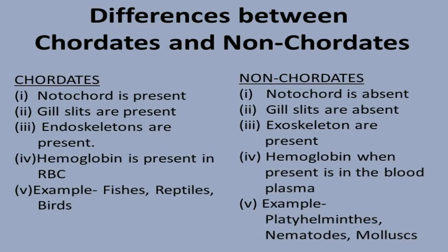In chordates, endoskeletons are present — a complete skeletal system — and hemoglobin is present in red blood corpuscles. Examples of chordates include fishes, reptiles, and birds.